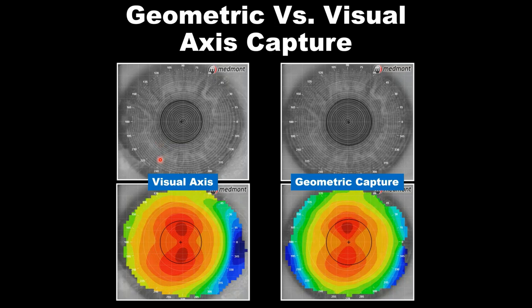Once you have your visual axis capture, you know what the patient is actually looking through when they fixate. With the geometric capture, you understand if the eye has any natural displacement. For example, looking at the visual axis capture you might say the cap of the cornea — the yellow-green border — looks like it's pulled to the temporal side. Whereas when you look at the geometric capture, the contours might be stretched a little more nasal. So at the very least, we would expect our lens to position well laterally, maybe if anything a little bit nasal. That's the benefit of geometric captures — understanding natural eye displacement.